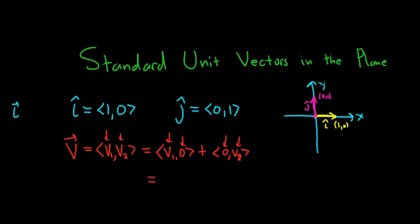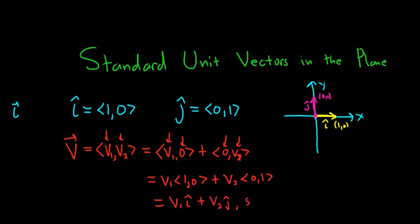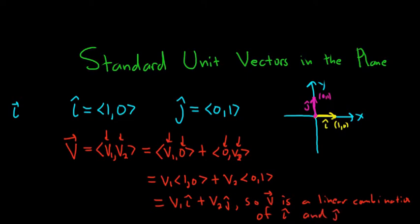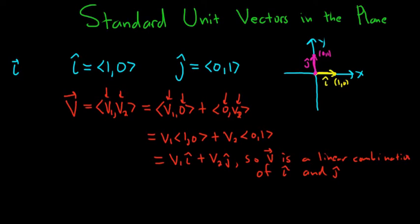Then you can do something even funkier. You can factor out v1 via scalar multiplication to get v1 times <1, 0>, and then pull out v2 to get v2 times <0, 1>. You realize that this is v1*i-hat plus v2*j-hat. So v is a linear combination of i-hat and j-hat — that's what it's called. We can take a vector in component form and write it as a linear combination of unit vectors.